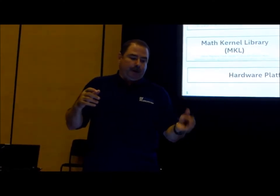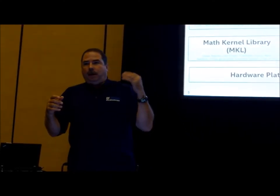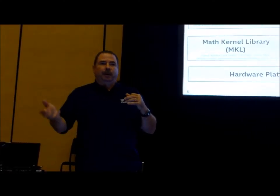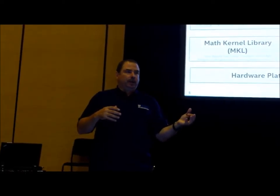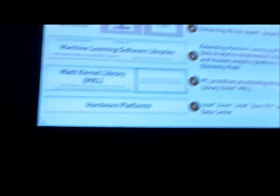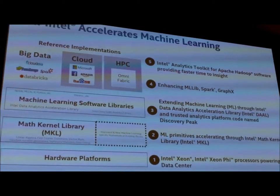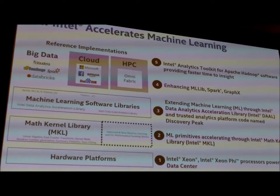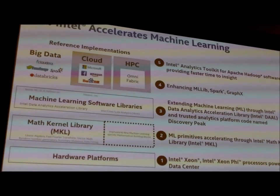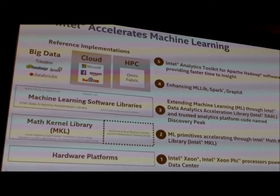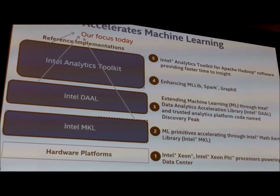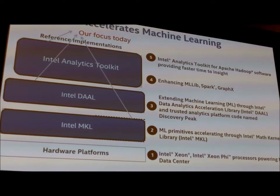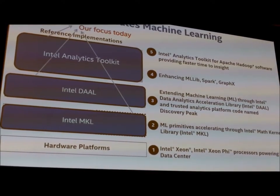Above that you've got big data with several things going on with Hadoop, Cloudera, Apache Hadoop, Hortonworks, MapR, and then you have the cloud providers — Microsoft, Amazon, and others. You also have the high performance computing arena with OmniFabric. Today we really want to hit three layers and how these things working together are going to help you accelerate your performance.